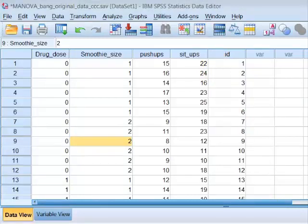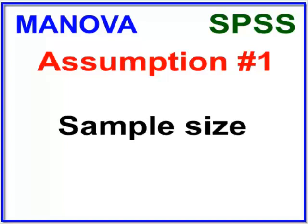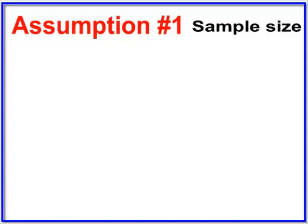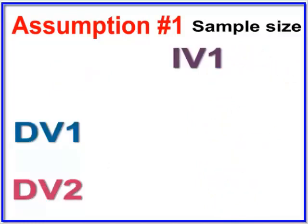Step one: we always need to check the assumptions of each study — not just for a MANOVA, but for every statistical study. The number one assumption is sample size. The minimum number of sample size for a MANOVA is that each cell of the analysis must have at least as many subjects as there are DVs. So since we have two DVs in our study, each cell has to have a minimum of two subjects. The first IV is the drug dose with three different levels.